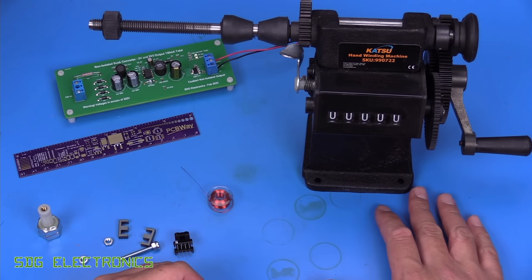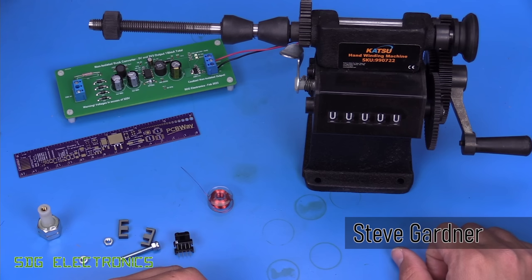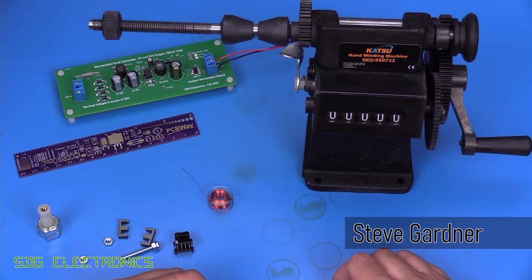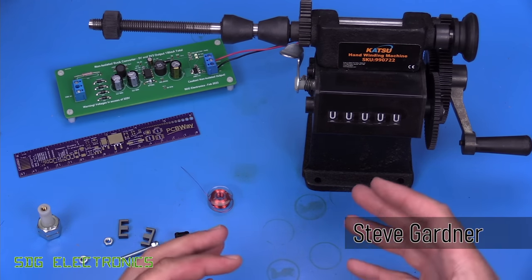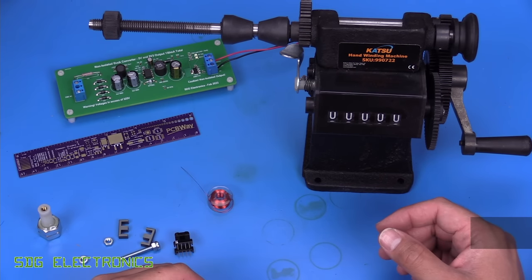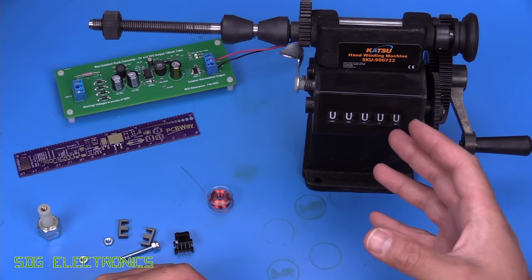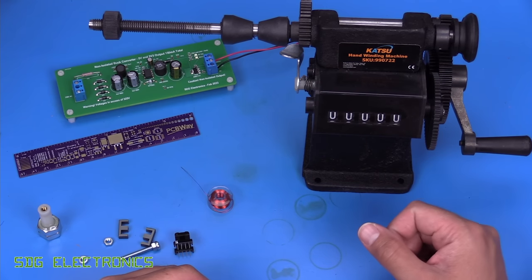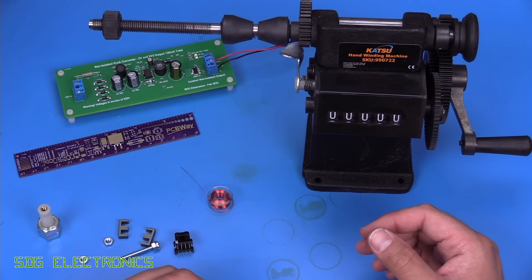In the last video we completed our flyback converter PCB design and I'm just about to order all of the components on it but one of the items that we can't order is the flyback transformer itself. Now if you're clever with the tool you can actually get it to design with one of the transformers that you can buy off the shelf but in this particular example we do actually need to wind our own and there's quite a few different approaches to it.